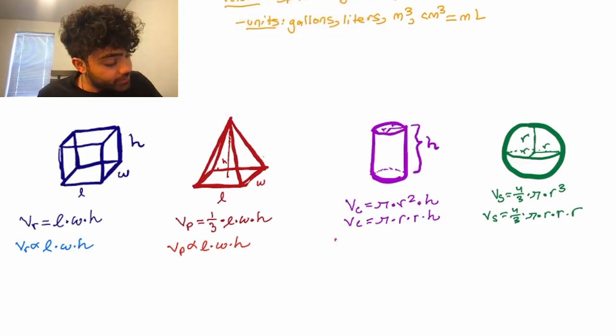Now we have our cylinder. So v sub c is proportional to r times r times h, because pi is a constant, but those radii represent length and width. So v sub c is actually also proportional to length times width times height.